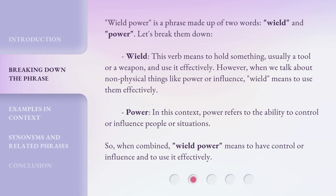'Wield power' is a phrase made up of two words: wield and power. Let's break them down. Wield: this verb means to hold something, usually a tool or a weapon, and use it effectively. However, when we talk about non-physical things like power or influence, wield means to use them effectively. Power: in this context, power refers to the ability to control or influence people or situations. So, when combined, 'wield power' means to have control or influence and to use it effectively.